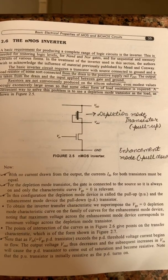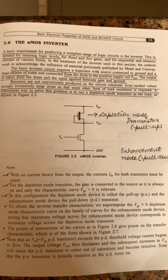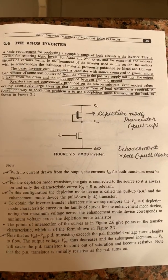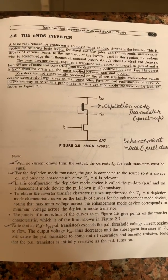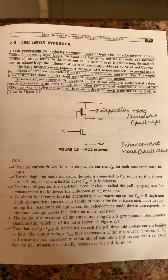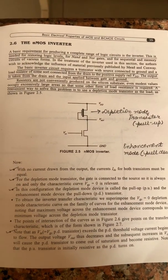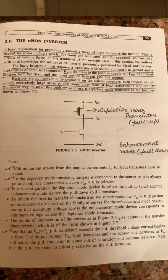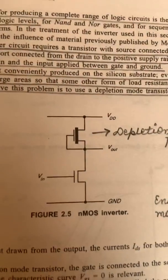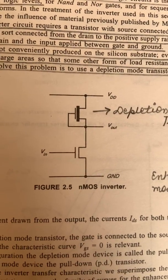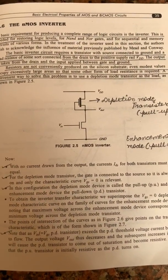Pull-up and pull-down are the second names of depletion and enhancement mode transistors. As input voltage increases and exceeds the pull-down threshold voltage, current begins to flow. The output voltage Vout decreases, and subsequent increases in input voltage cause the pull-down transistor to come out of saturation and become resistive. Initially, the pull-up transistor is resistive when the pull-down transistor turns on. For understanding the NMOS inverter, you must have knowledge of all three operating regions: saturation mode, linear mode, and cut-off mode.